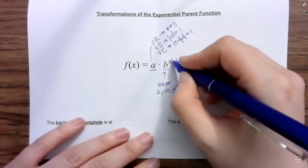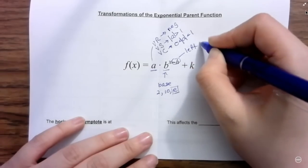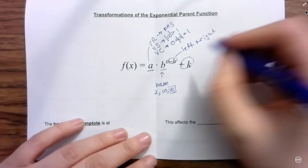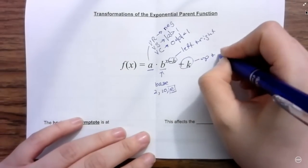So then you've got your h, which is your left and right translation, and you've got your plus k, which is your up and down translation.